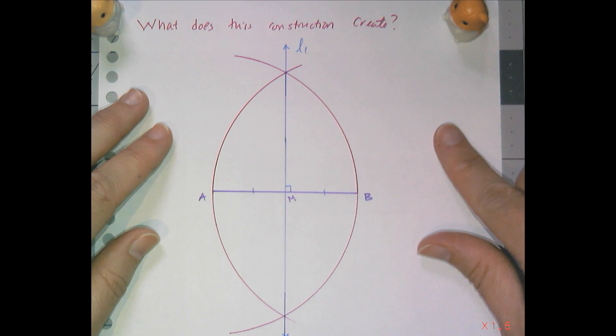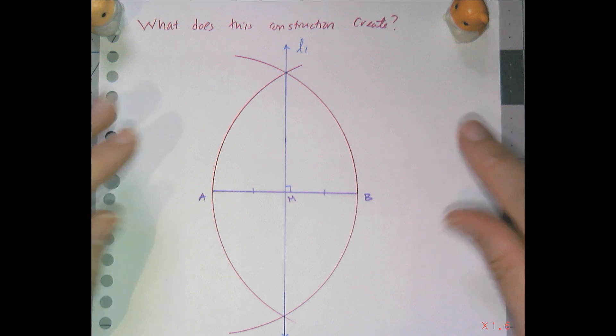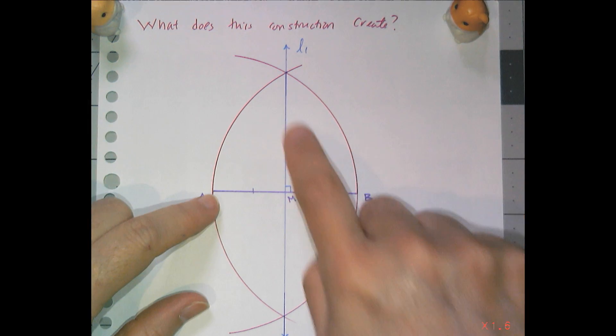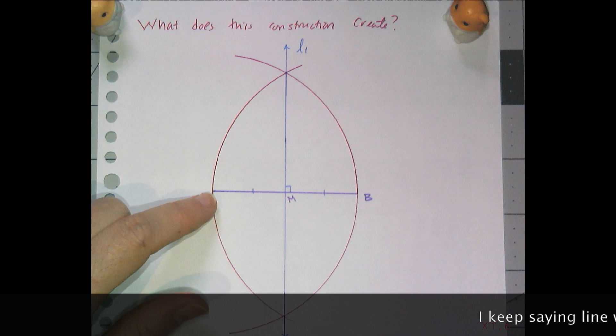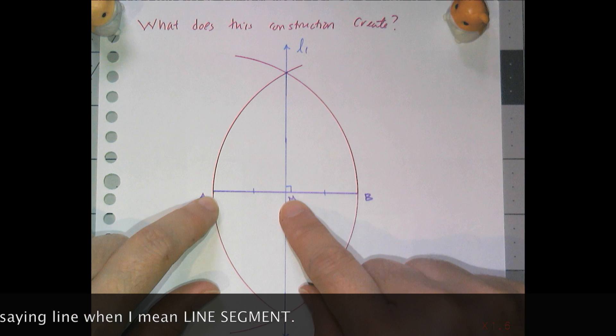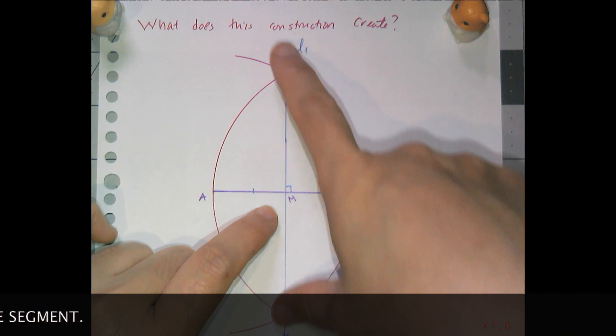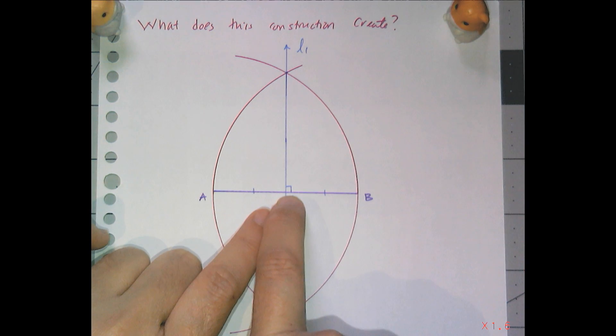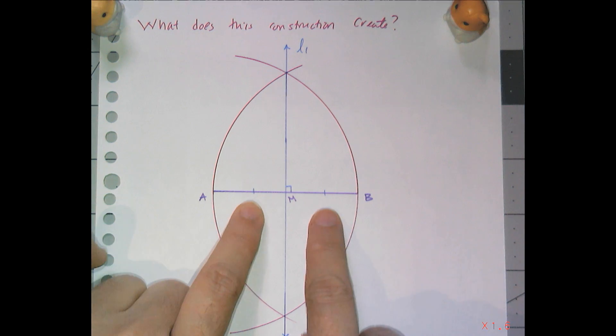So this construction of a perpendicular bisector gives me a lot more than just that line. If I need to create a midpoint of a given line, I can find the midpoint using this construction. I just don't need to draw this whole line in, I just need to find where that point is and then mark it as a midpoint.